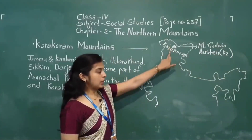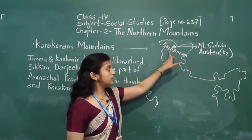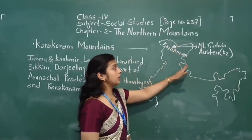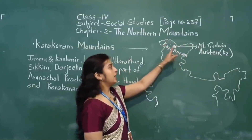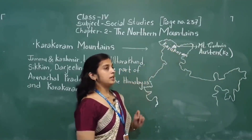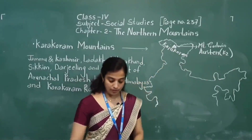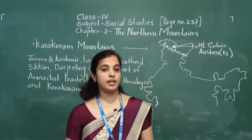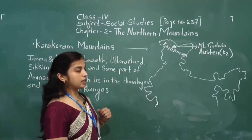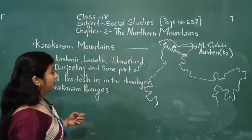All of you see this map. Karakoram is located in the northwest of Himalaya. The Himalaya mountains stretch from Jammu and Kashmir up to Arunachal Pradesh. This Mount Godwin-Austen is the highest mountain peak of the Karakoram ranges and also the highest mountain peak of India, and the second highest mountain peak of the world.